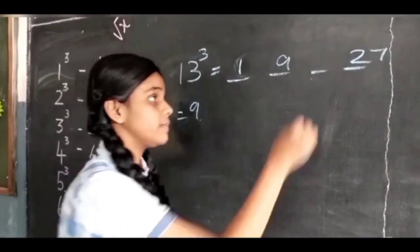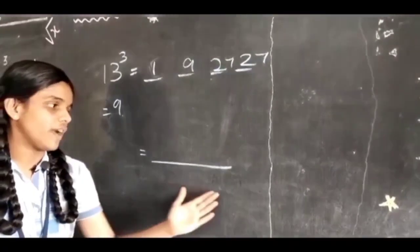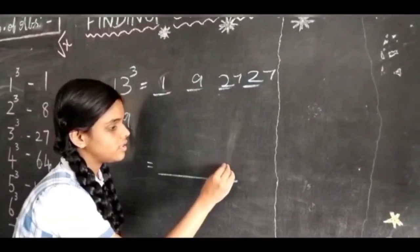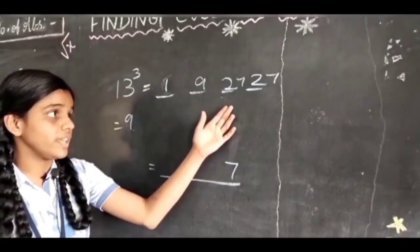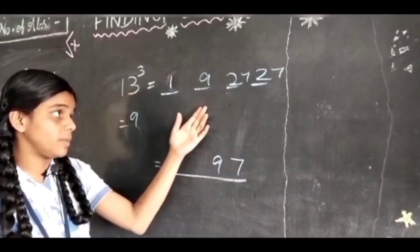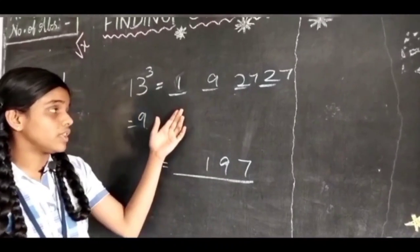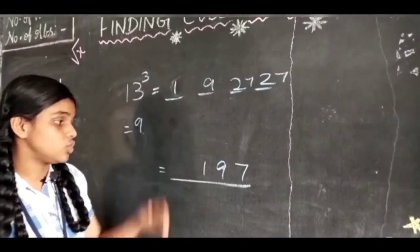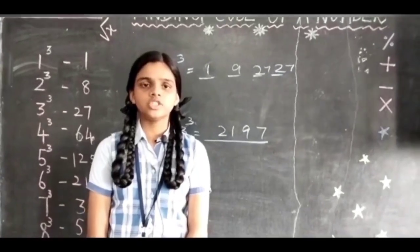Now write down the final answer. Concentrate on the units place - we write 7 in the unit place and 2 will be added with the next place, so we get 29. Again, 2 will be added with the next place, so we get 11, and 1 will be the carryover for the next term, so we get 2. The final answer is 2197. This we can do for all the digits.